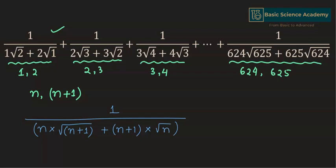You can see that the smaller number is multiplied by the square root of the larger number, and the larger number is multiplied by the square root of the smaller number. Hence, we can represent each of these terms as 1 divided by n multiplied by square root of n plus 1, plus n plus 1 multiplied by square root n.